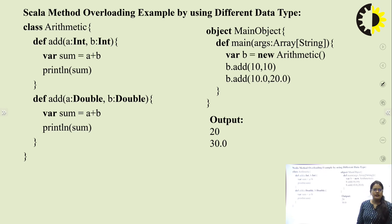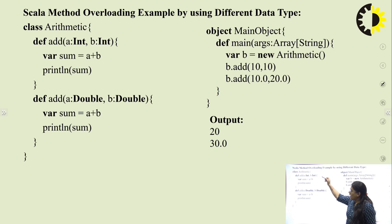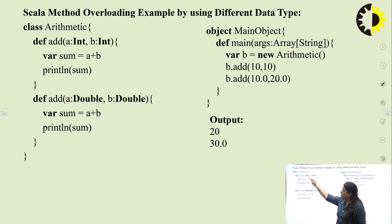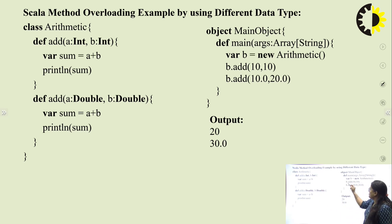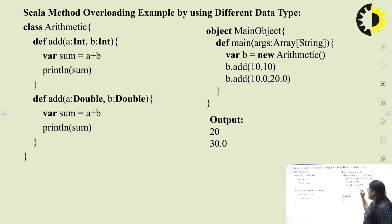Next is method overloading by using different data types. There are two methods named 'add', both with two parameters, but different data types. The first method uses (Int, Int) parameters and the second uses Float parameters. In main, b.add(10, 10) goes to the first method, and b.add(10.0, 20.0) — since 10.0 is Float — goes to the second method.